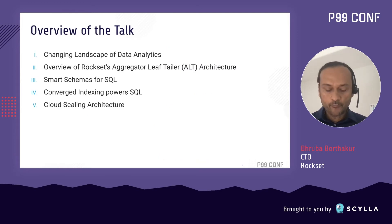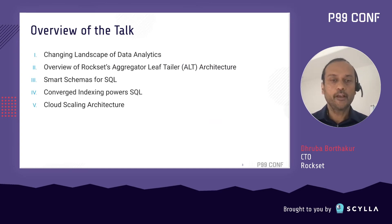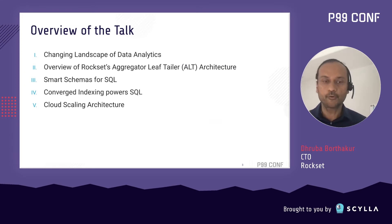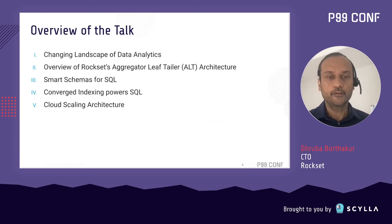So a quick overview of my talk today. First, I'm going to tell you a little bit about how data analytics is changing over the last few years or the last decade. Then I'll deep dive into Rockset's aggregator-leaf-tailor architecture and I'm going to tell you three specific things about this architecture: something about smart schema, something about converged indexing, and how cloud scaling architecture helps Rockset implement the service.